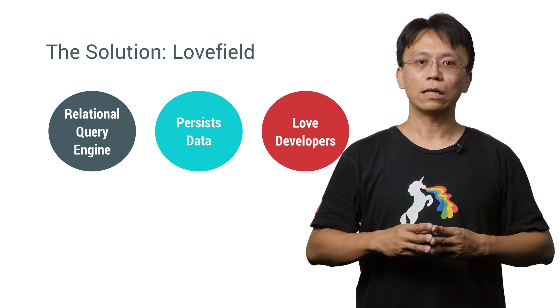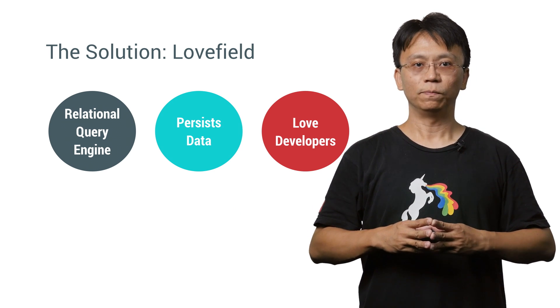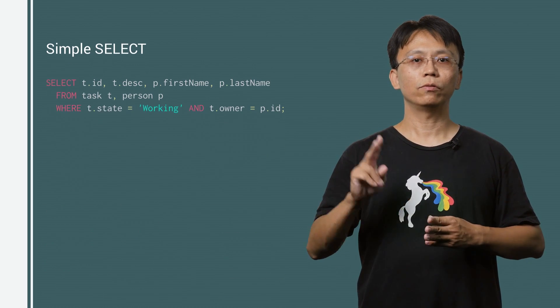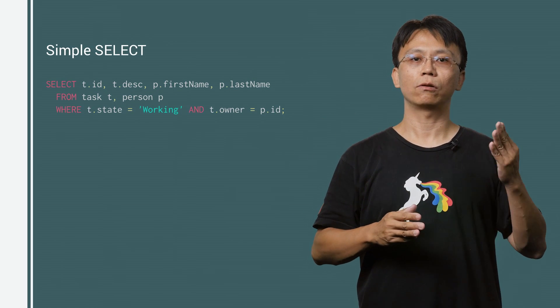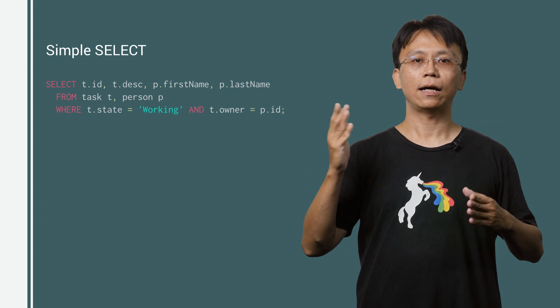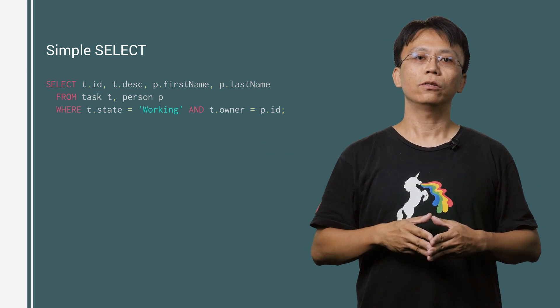Let's move to a quick example to see what Lovefield can do. Assume we have two different types of objects. One is called task, that stores a task to be finished. And the other is called person, which stores data about a person in our app.